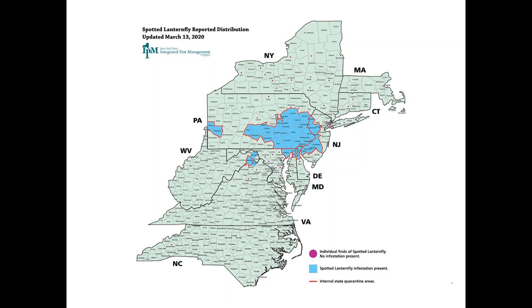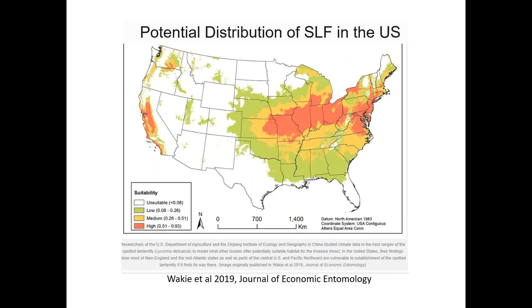A map published in the Journal of Economic Entomology shows the predicted distribution of where Spotted Lanternfly could exist. It stretches up into New York and New England, out into the Midwest and western parts of the country. A lot of big production areas have the climate that we think Spotted Lanternfly could thrive in, which is of great concern.